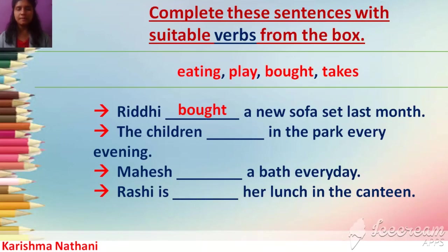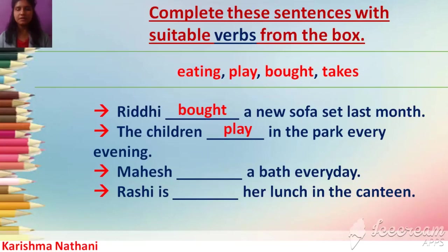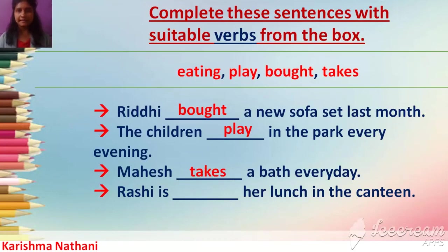'The children ___ in the park every evening.' Answer: 'Children play in the park every evening.' 'Play' shows simple present tense. 'Mahesh ___ a bath every day.' Answer: 'Mahesh takes a bath every day.' 'Takes' shows simple present tense — means present state.